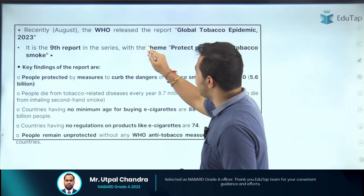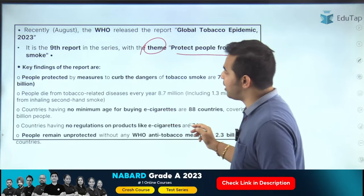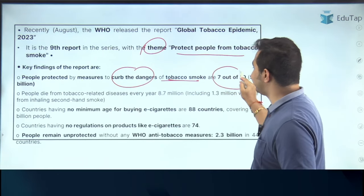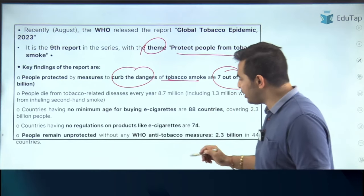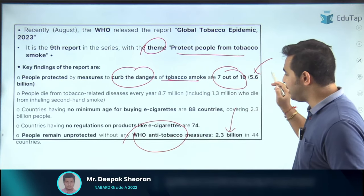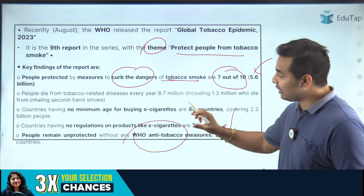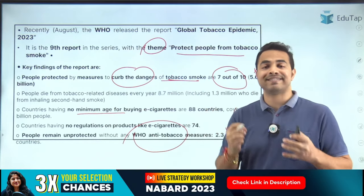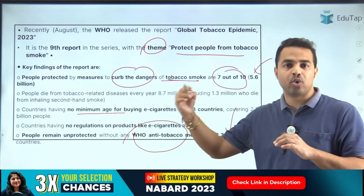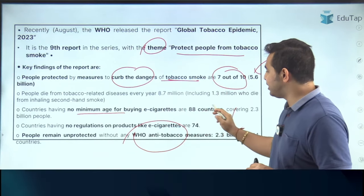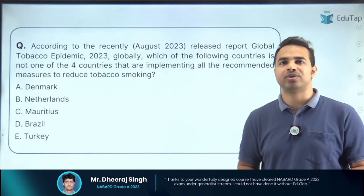Key findings: 7 out of 10 people — a total of 5.6 billion — are protected by measures to curb the dangers of tobacco smoke. The people who remain unprotected without any WHO anti-tobacco measures are 2.3 billion in 44 countries. Additionally, 88 countries across the world have no minimum age regulation for purchasing e-cigarettes. These are the important data points to remember.